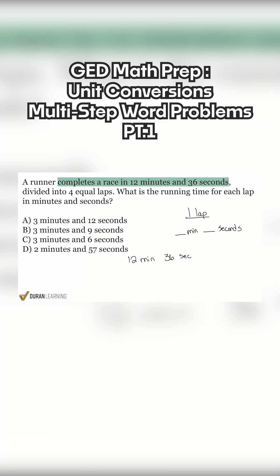Then we see that it says it's divided into four equal laps. What is the running time for each lap in minutes and seconds? So we see clearly here that it says divided into four equal laps.